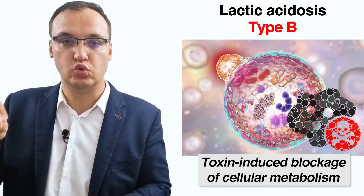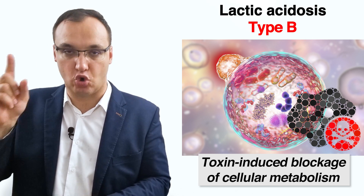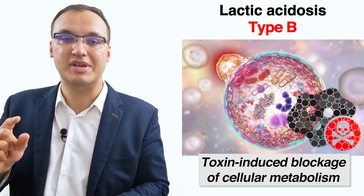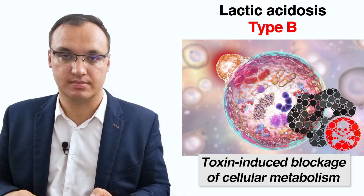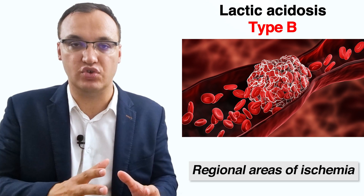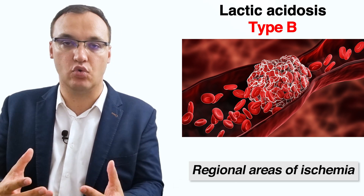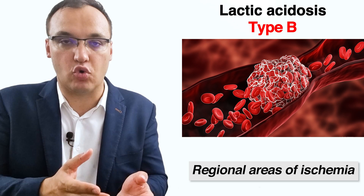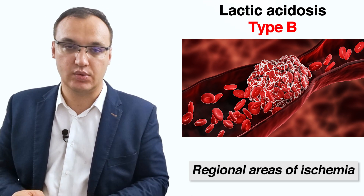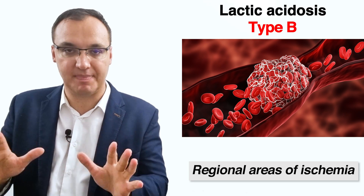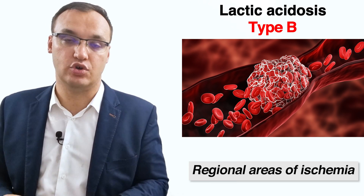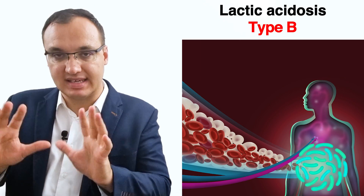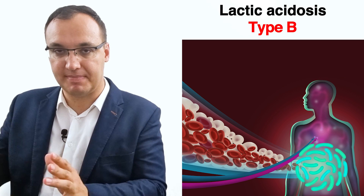Toxin-induced blockage of cellular metabolism results from a toxin that arises from either excess production of acids or decreased acid elimination. This process can lead to ischemia, which is any reduction in blood flow resulting in decreased oxygen and decreased nutrient supplies. We will discuss how this happens in patients who take an accidental or intentional acute overdose of, for example, metformin.